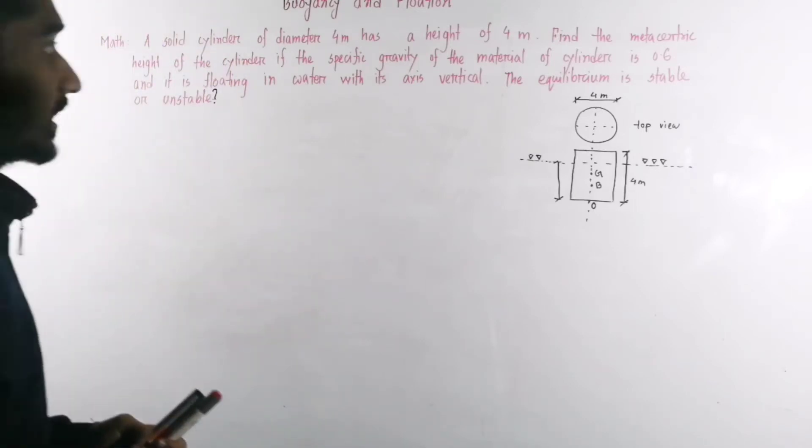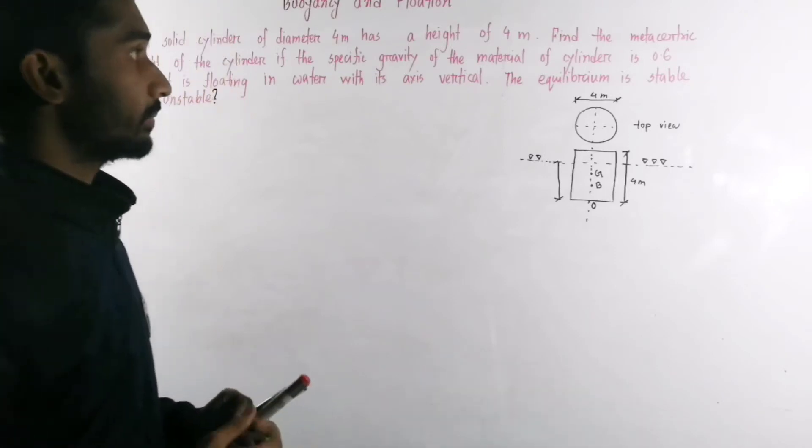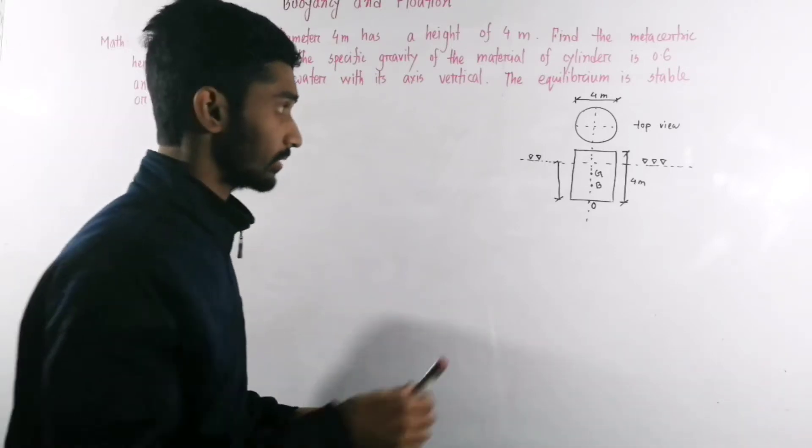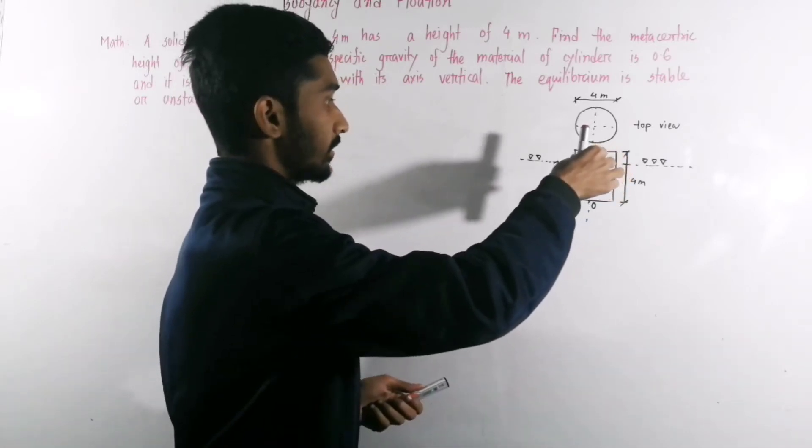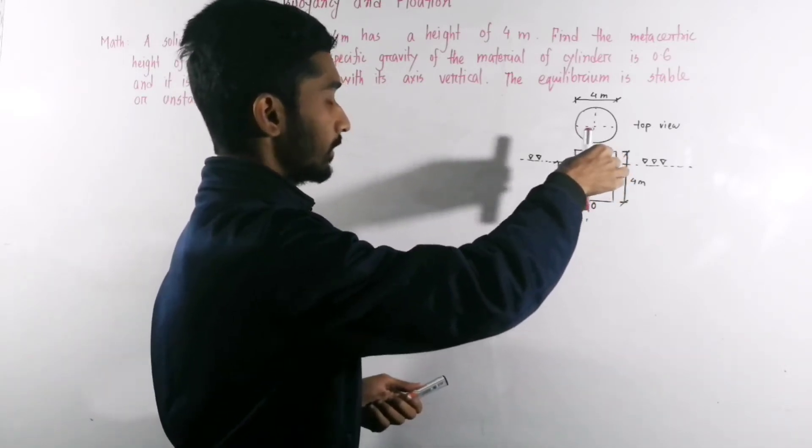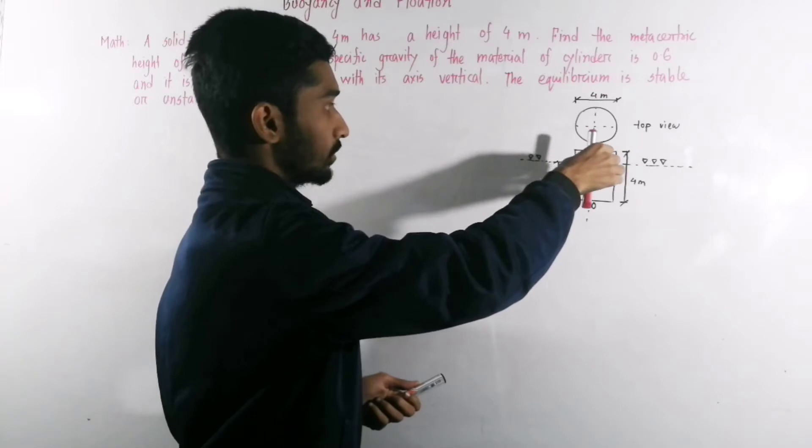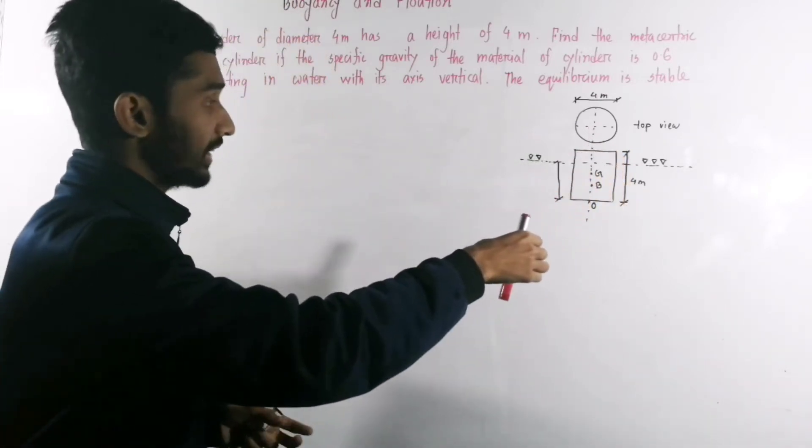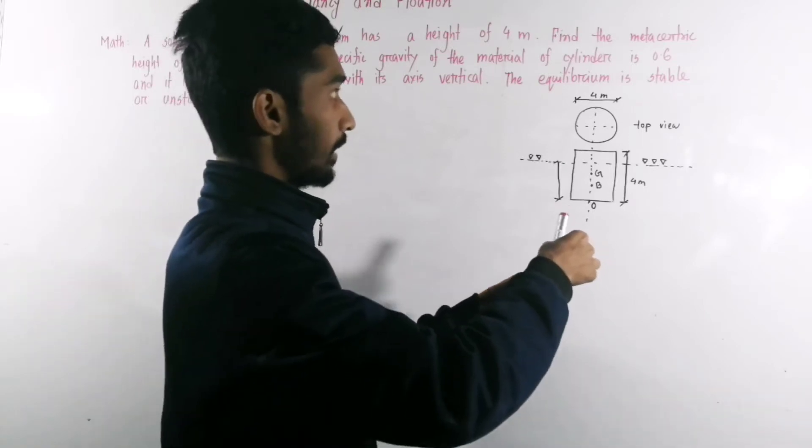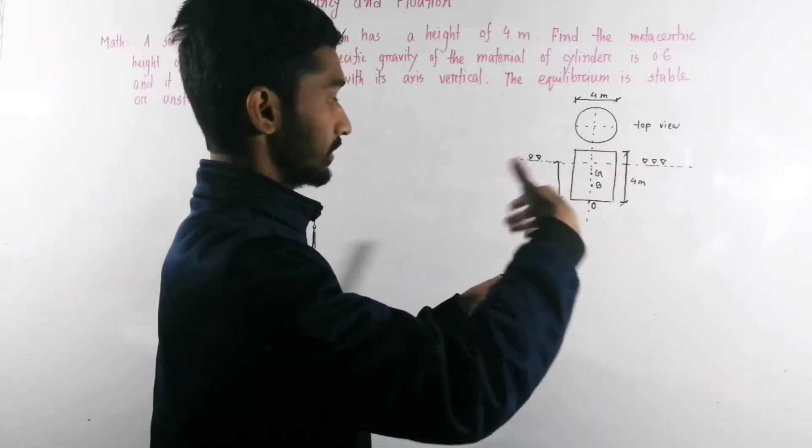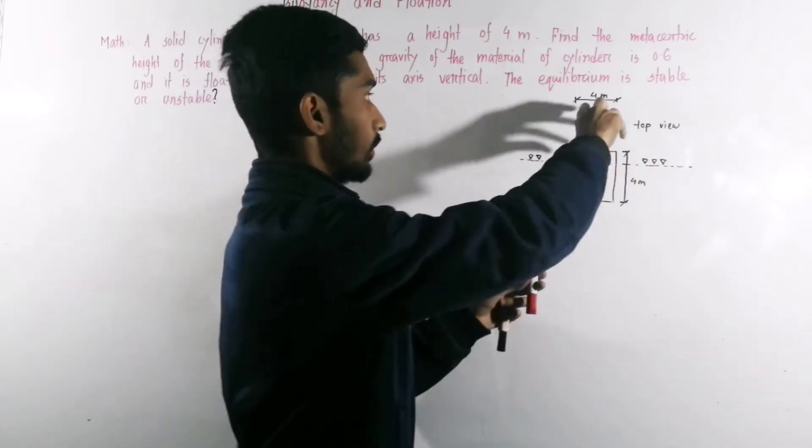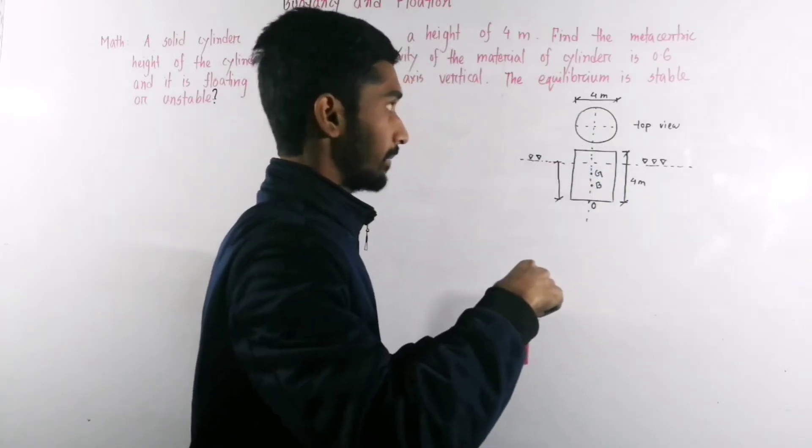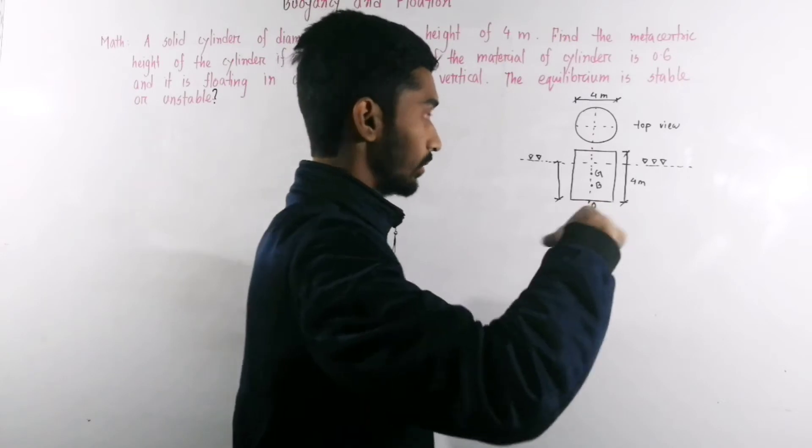The equilibrium is stable or unstable. This is the cylindrical body, the solid body. Whether the metacentric height indicates stable or unstable, it is unstable. Here is the top view, so we can see that the diameter is 4 meter.